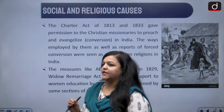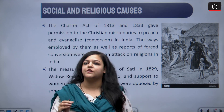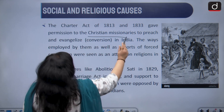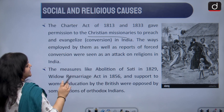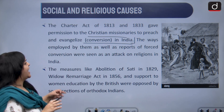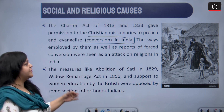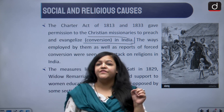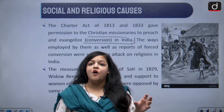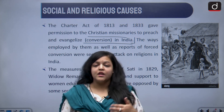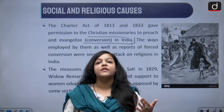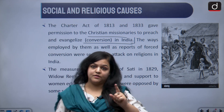Now let us talk about the social and religious causes. For a long time the British had controlled missionary activities, but the Charter Acts of 1813 and 1833 gave Christian missionaries the right to preach and evangelise — essentially, to convert people in India. The methods they adopted sometimes involved forcing people to convert to Christianity, which was seen as an attack on the religious and cultural fabric of Indians.